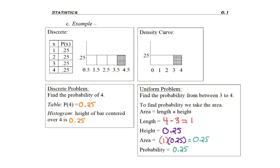So the thing to notice is the two pictures look identical, and the two probabilities are identical. One was found by the height of a histogram, and one was found by the probability of being an area under a curve. But they're the exact same thing.